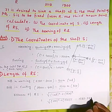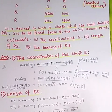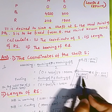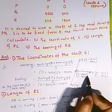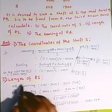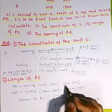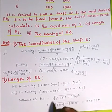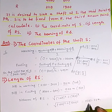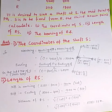So the length of RS is 1503.33 meters. To summarize so far: the coordinate of shaft S is northing = 2010 meters and easting = 400 meters. We found the latitude of RS = 100 meters and departure of RS = 1500 meters. Applying the distance formula — root over of latitude squared plus departure squared — gives us the length of RS as 1503.33 meters.